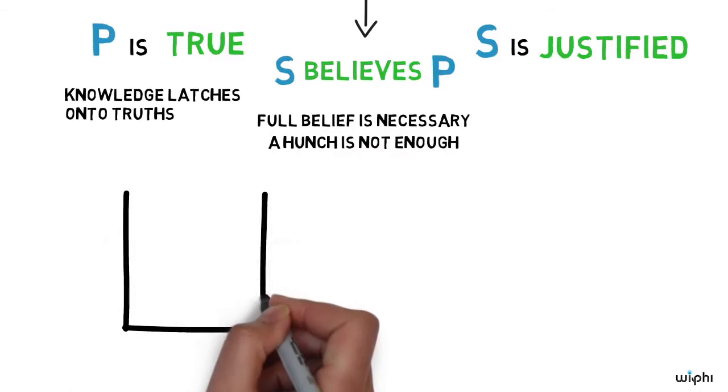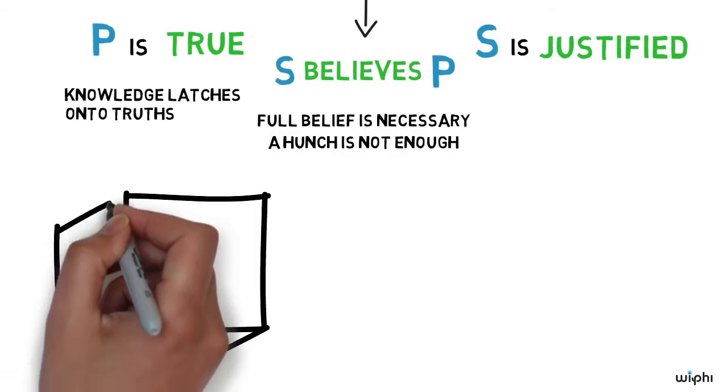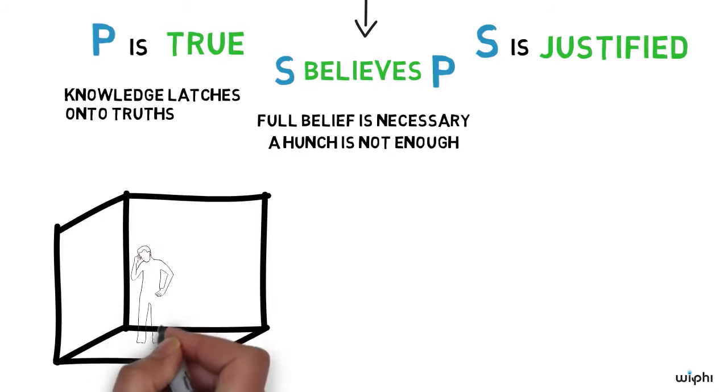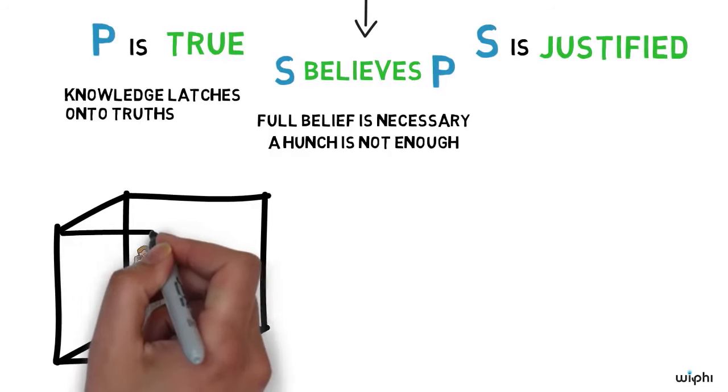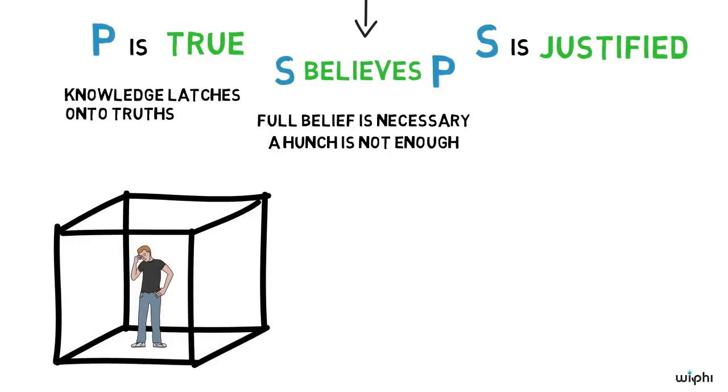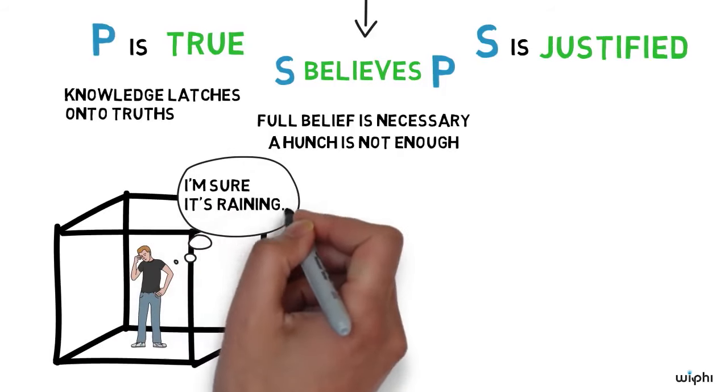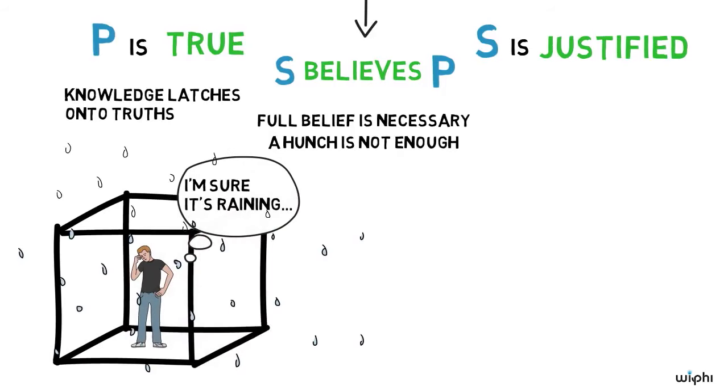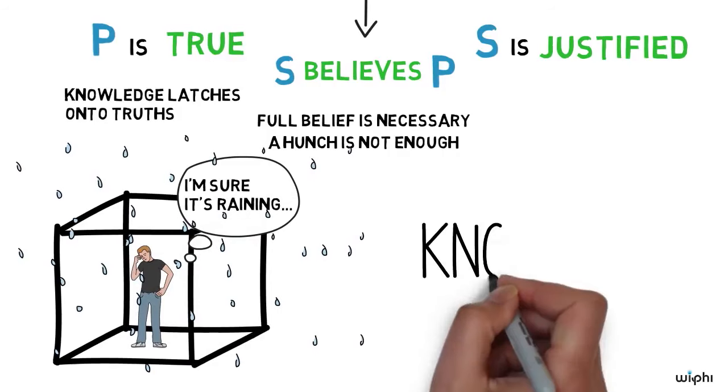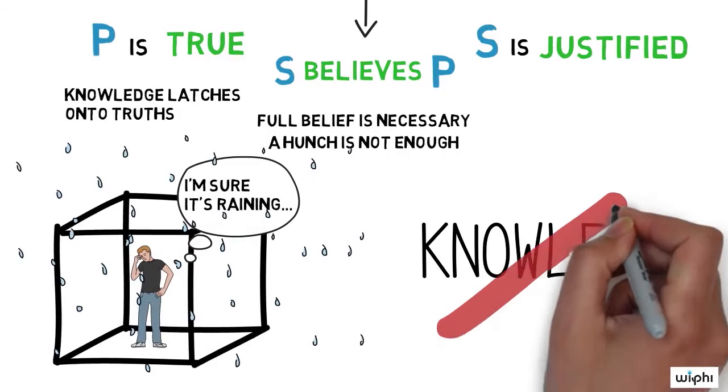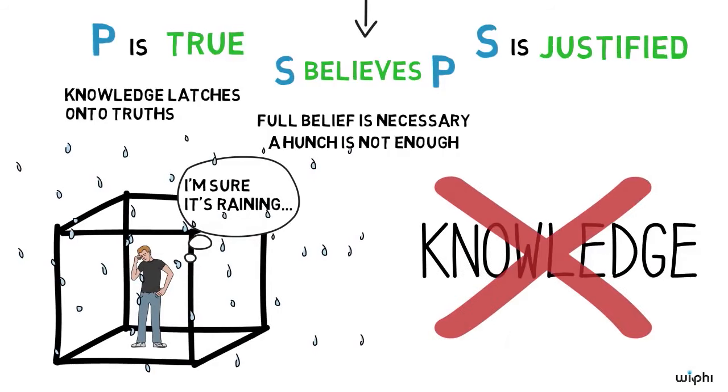We need the third condition because knowledge demands more than true belief. You may remember pessimistic Pierre from our first video in this series, who wakes up in a windowless room every day believing that it is raining outside. Even on a day when this pessimistic belief is true, it doesn't seem right to say that he knows that it is raining. He lacks justification.